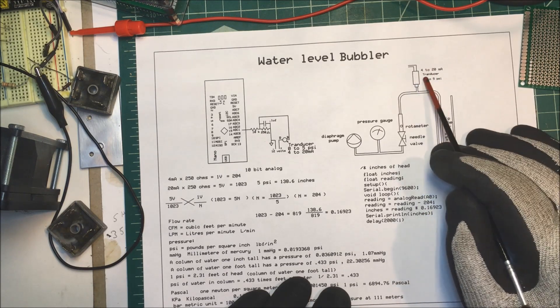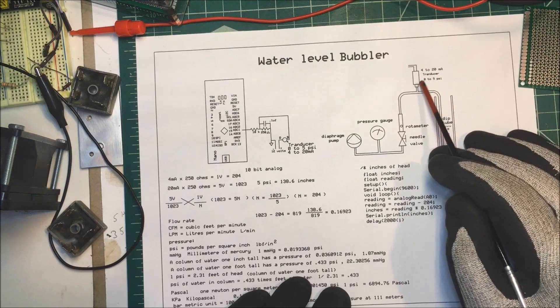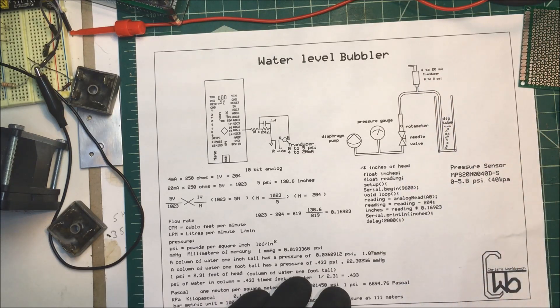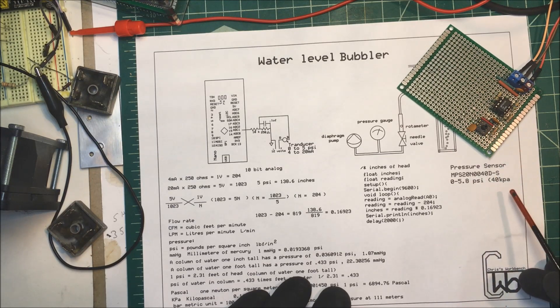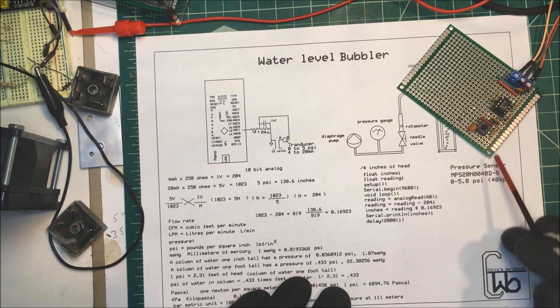These four to 20 milliamp transducers, they can be expensive, but you can use one of these sensors here. You'll see them are advertised for Arduinos here. It's 40 KPA, and that's 5.8 PSI. And you need a little op amp here to increase it.